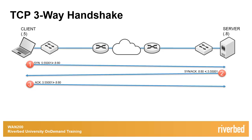After the client has resolved the server host name to an IP address, the client, as seen in step one, will then send out into the network the first leg of the handshake.